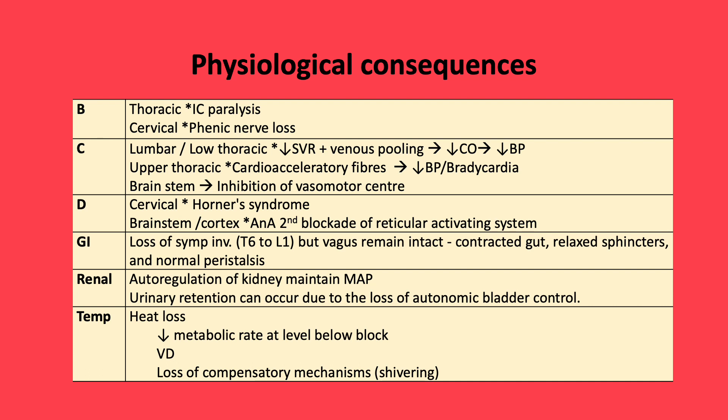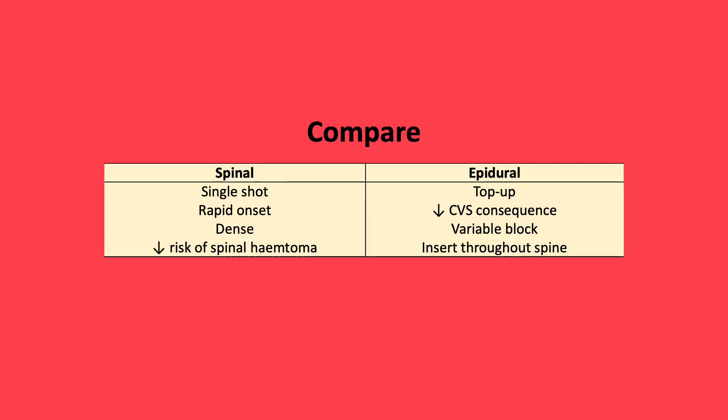Temperature: heat loss usually occurs due to a reduction in metabolic rate below the block, vasodilation, and loss of compensatory mechanisms. Comparing spinal and epidural techniques: spinals are single-shot, rapid-onset, and local anaesthetic provides a dense block. As the needle used has a higher gauge, there is a reduced risk of spinal haematoma. Conversely, epidurals can be topped up by a catheter, with reduced cardiovascular consequences. However, the block is more variable and can be inserted at different vertebral levels.